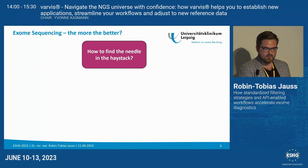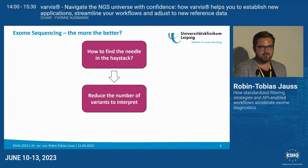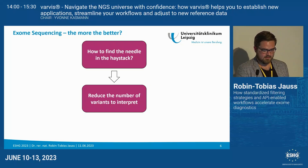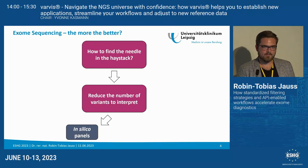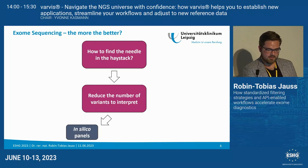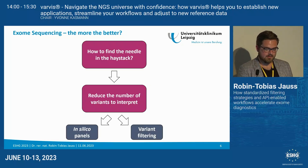The approach might sound a bit simple, but it makes absolute sense: we have to reduce this vast amount of variants which we have to interpret. We can do this in two ways — either using targeted in silico panel approaches, or using efficient variant filtering to reduce this number.